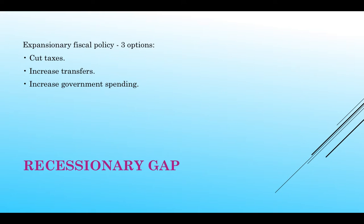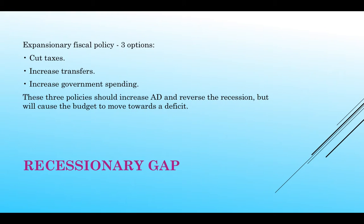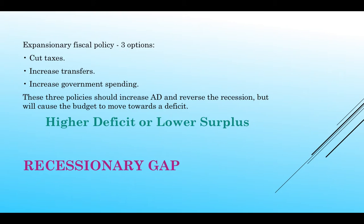When these three things happen, they're done to fix a recessionary gap by increasing aggregate demand, and they should help to bring us out of recession. The problem is it's going to cause the budget to move towards deficit. While it helps a recession, it increases our national debt. Expansionary fiscal policy is either going to lead to a higher deficit, or if the government was in a surplus, it's going to take away from that surplus.